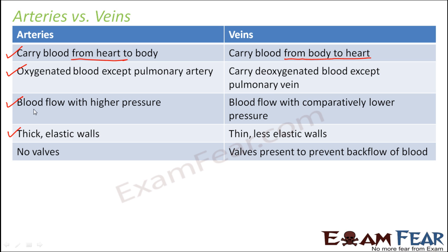Arteries have thick walls because blood flows through them at very high pressure, having been pumped from the heart. Veins have comparatively thin walls because blood flows through them at a lower pressure. Arteries have no valves, as a little backflow of oxygenated blood is not harmful.